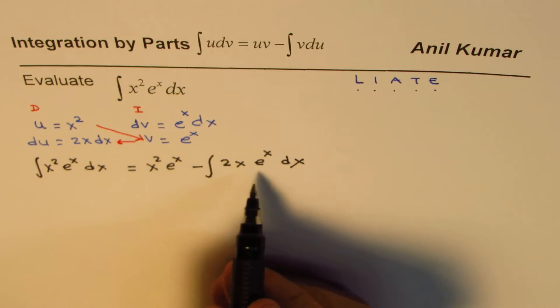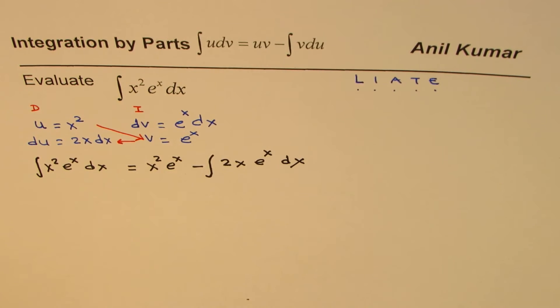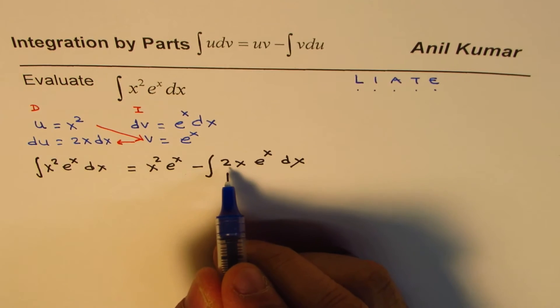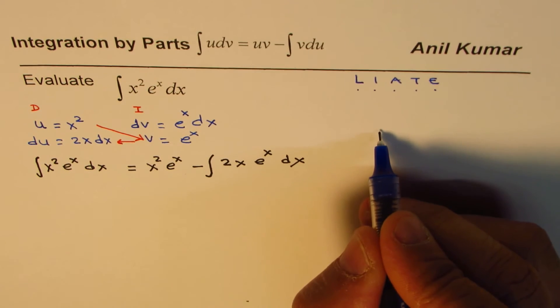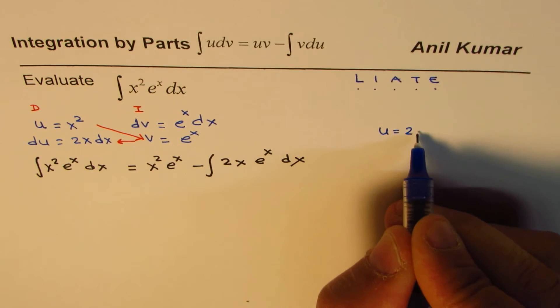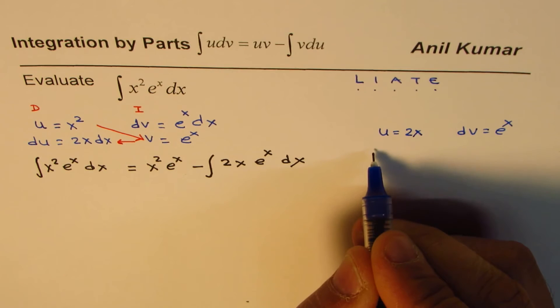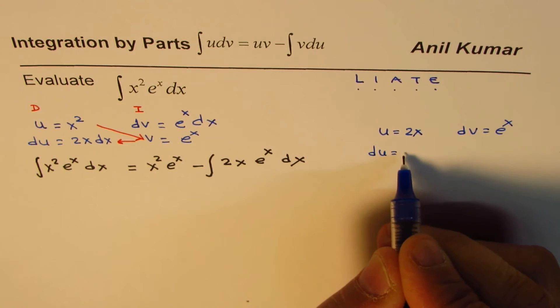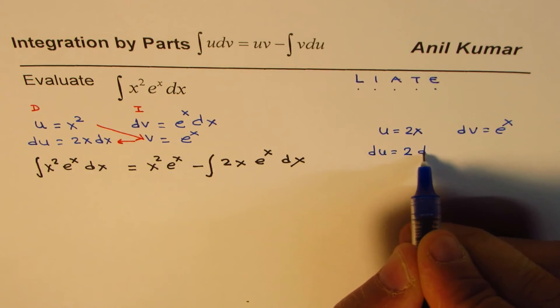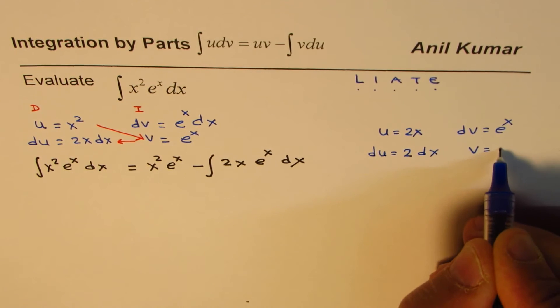Again we'll make the substitution. You can take two outside or you can just keep it with this. We'll take u as equals to 2x and dv as equals to e to the power of x. So now du can be written as 2 dx and v is again e to the power of x.